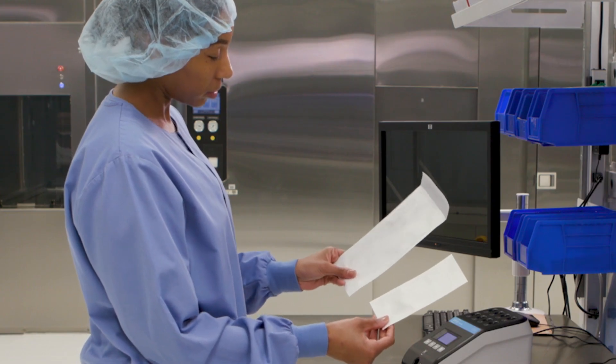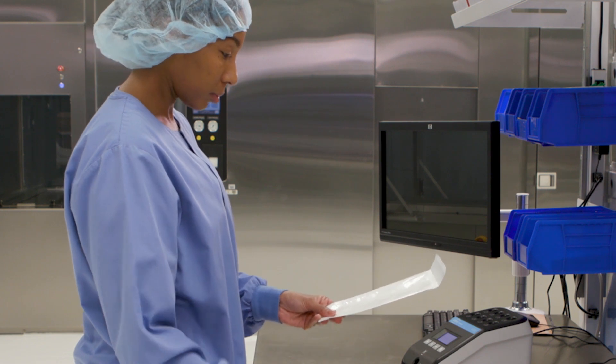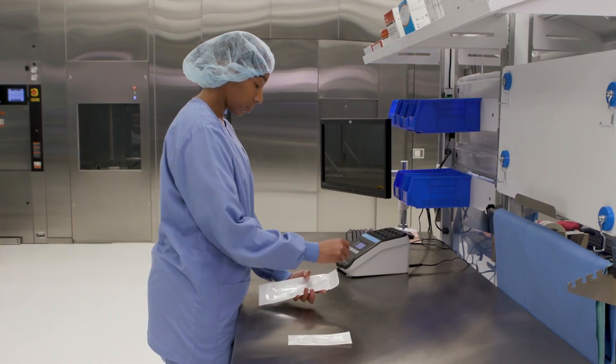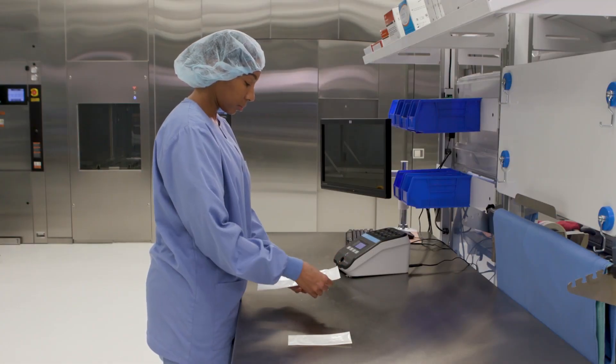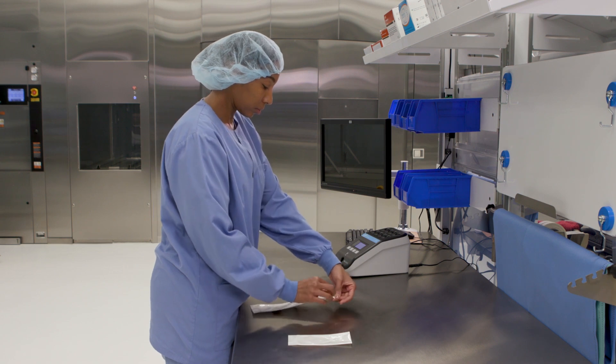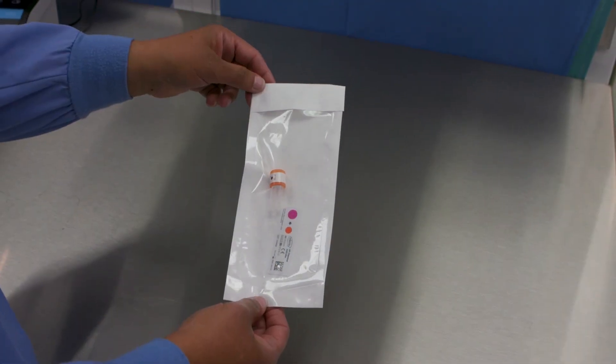To build the test pack, select an appropriately sized pouch. Insert one chemical indicator into the pouch, ensuring it is visible. Then place the BI inside and seal the pouch.